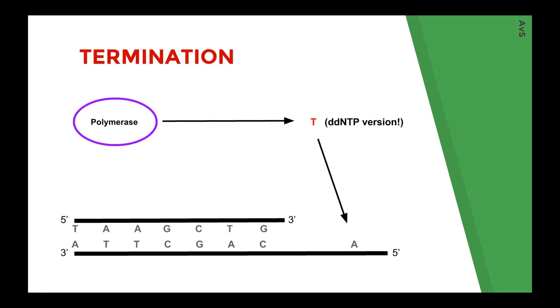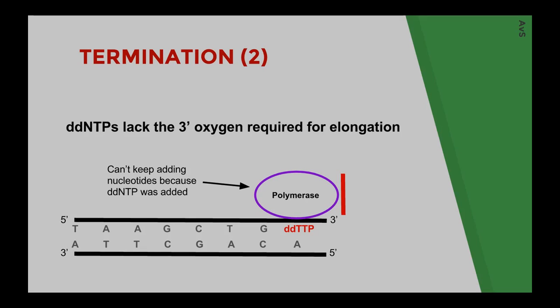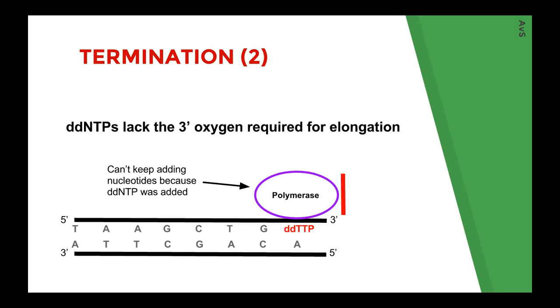But when the polymerase adds the ddNTP, the reaction stops. This is because the polymerase has to recognize the substrate, and it can't recognize it as a substrate and continue the reaction because ddNTPs aren't the same as dNTPs. It says this isn't DNA because ddNTPs lack that 3' oxygen that's in the backbone, that's in the sugar, and so it can't keep adding because the ddNTP was added to the sequence.